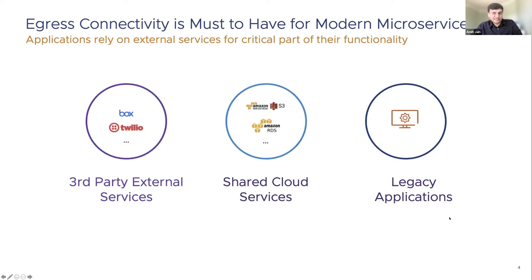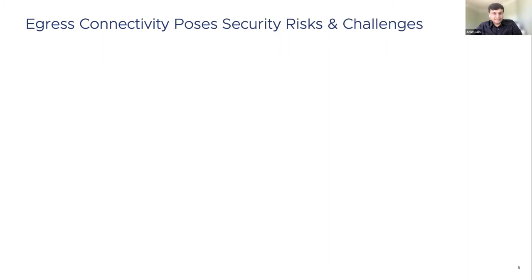Egress connectivity is a must-have for cloud-native apps. Applications use external third-party services such as Box and Twilio for communication, shared egress cloud services provided by cloud service providers such as S3 and RDS for database, and they also reach out to on-premise legacy apps deployed on VMs or bare metal. All of the above usage makes egress connectivity a must-have for cloud applications.